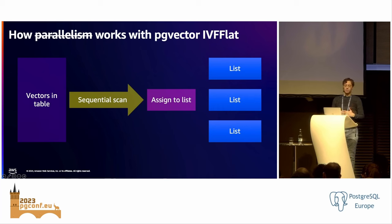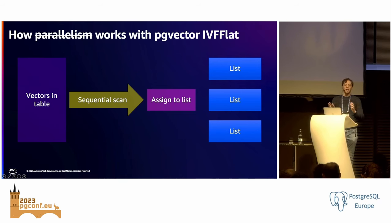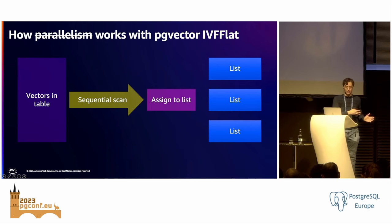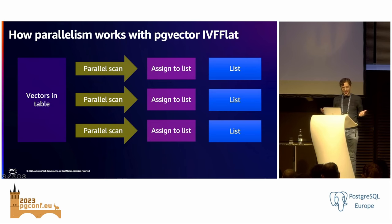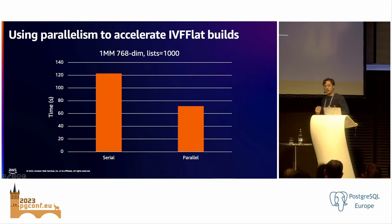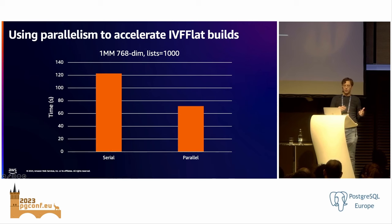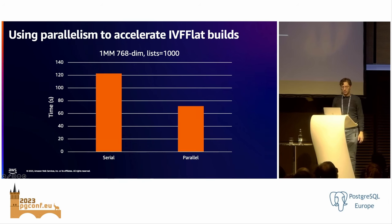IVF flat is also sensitive to memory — you might need to tune memory parameters beyond what you're normally used to, in particular working memory. Since pgvector 0.5, IVF flat supports parallel builds, and you do want to take advantage of that. Previously, when building the index, pgvector was doing a sequential scan over your table — going through all 10 million records one by one. In newer versions it supports a parallel scan. In my testing on a dataset of about 100 million 768-dimensional vectors, build time went from about 24 hours to 6 hours, and on smaller datasets I saw about a 2x speedup.